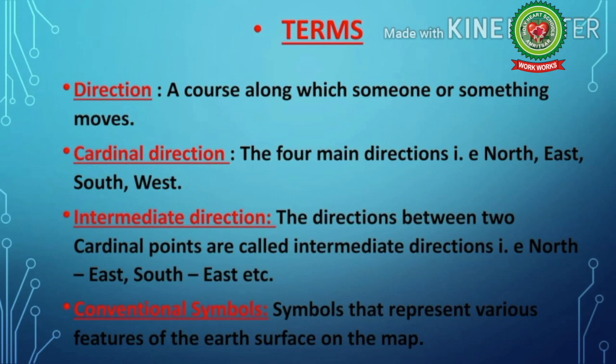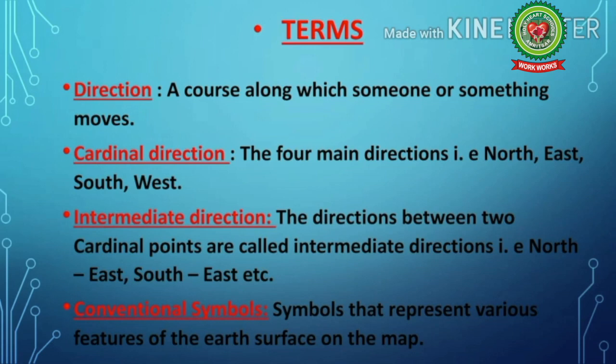Now students, let's discuss important terms related with this topic. Number one: direction means a course along which someone or something moves. Number two: cardinal direction means the four main directions — north, east, south, and west. Number three: intermediate direction means the directions between two cardinal points are called intermediate directions, such as northeast, southeast, etc. Number four: conventional symbols means symbols that represent various features of the earth's surface on the map.